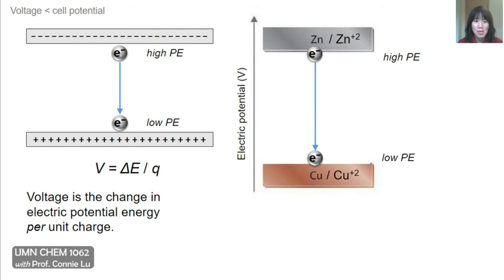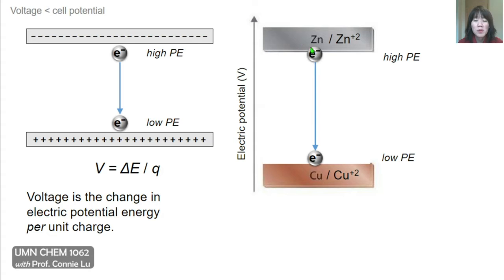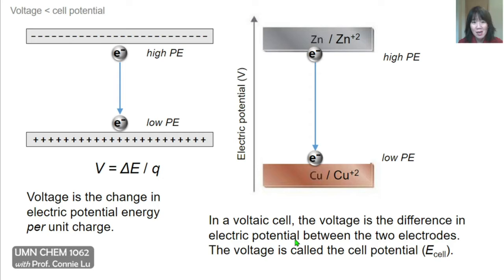In voltaic cells, metal electrodes naturally have different electric potentials. An electron housed inside zinc metal will have a higher electric potential energy than an electron housed in copper metal, where it would have a lower electric potential energy. Because of this difference in energy, there is a natural driving force for the electron to move from zinc to copper 2+ to form copper metal. So in a voltaic cell, the voltage is this difference in electric potential between the two metal electrodes, called the cell potential, represented by E subscript cell.